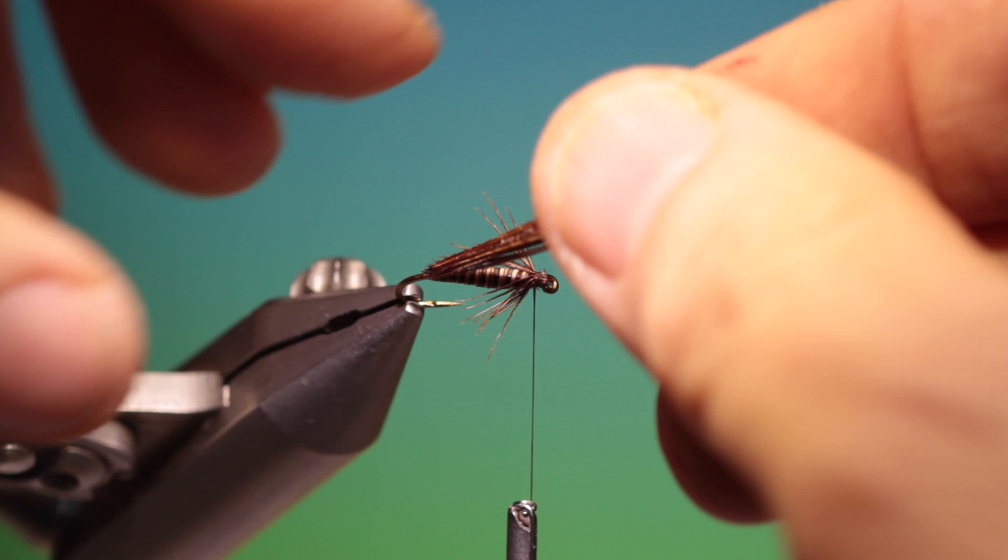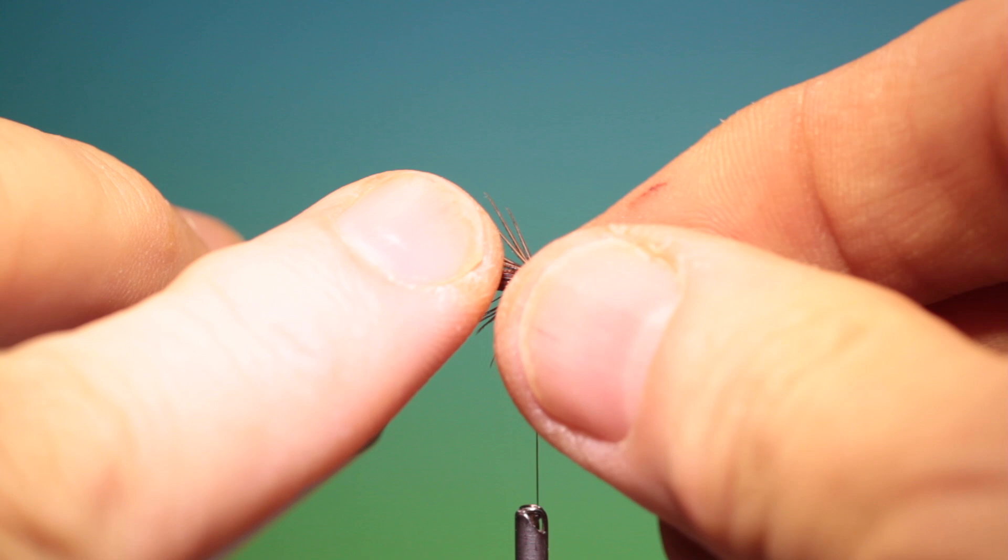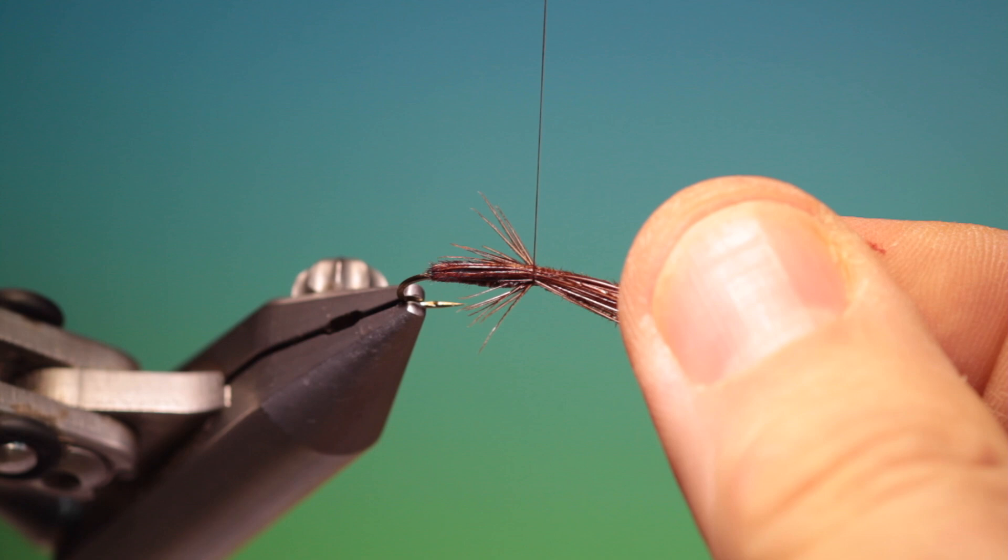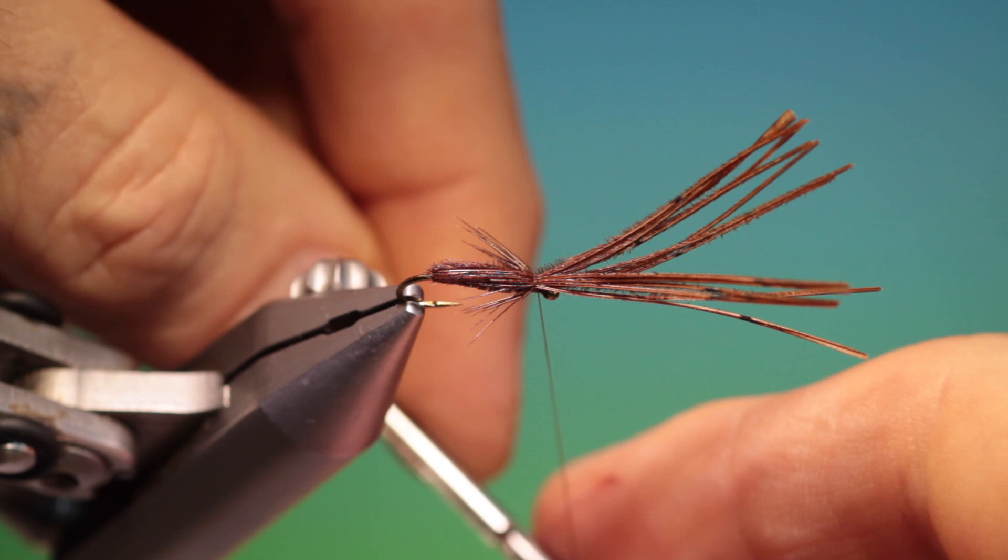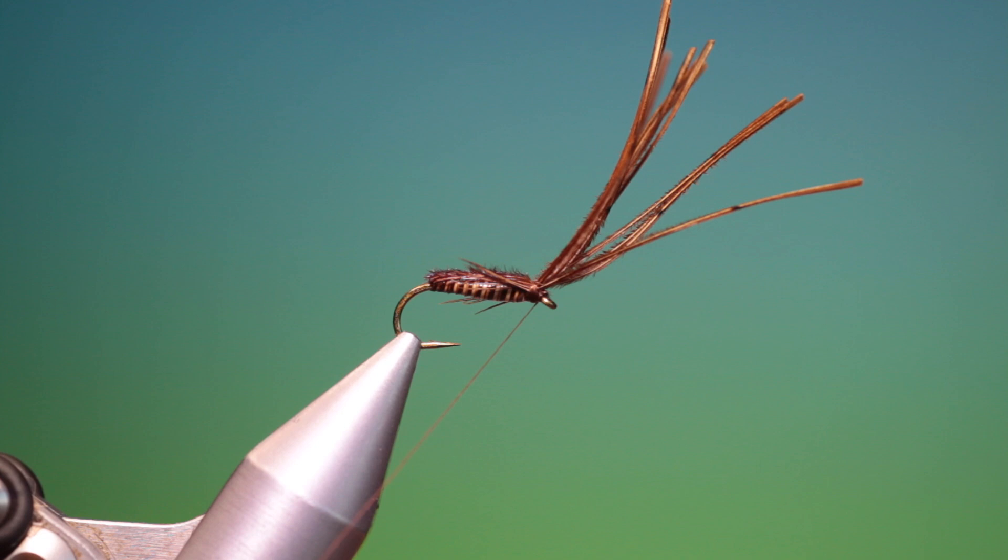Then we take the shell back. We want to get these straight, so I'll put a comb through them. And we'll take a wrap of tying thread to lock them in position. That's good, and then we can secure them, lift them up with a finisher.